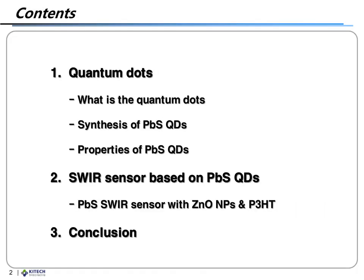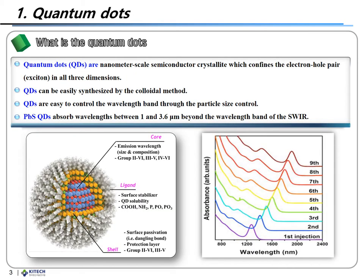The presentation will proceed in the following order. Quantum dots are nanometer-scale semiconductor crystallites which confine the quantum hall effect in all three dimensions. Quantum dots can be easily synthesized by the colloidal methods and are easy to control the wavelength bands through optical size control.